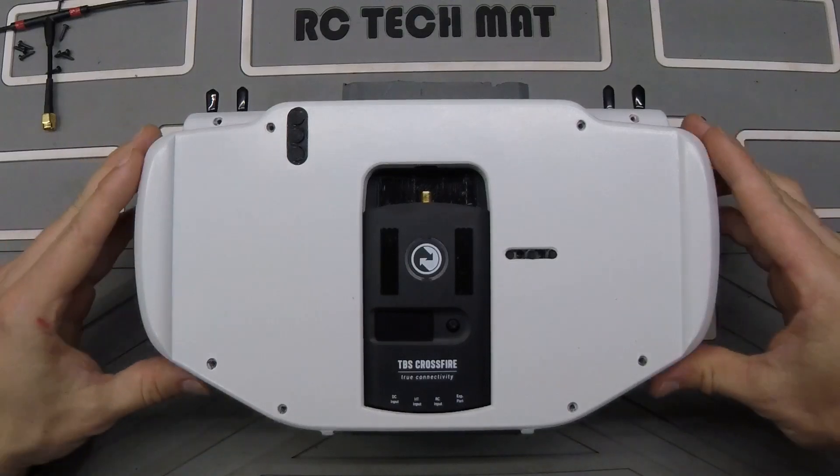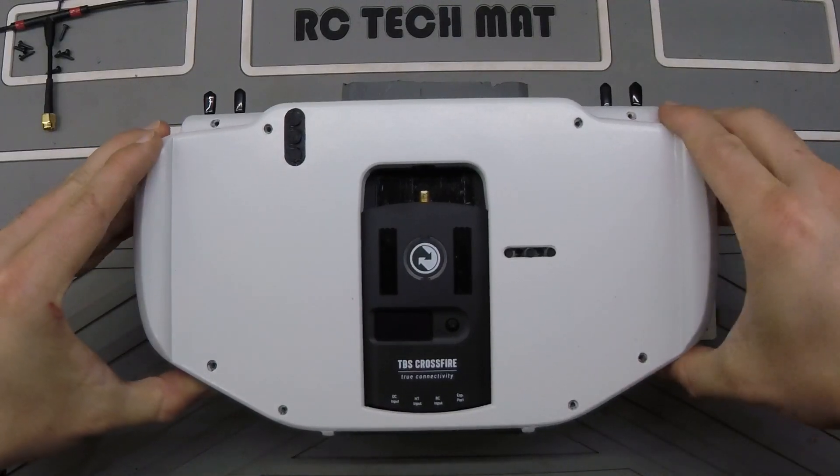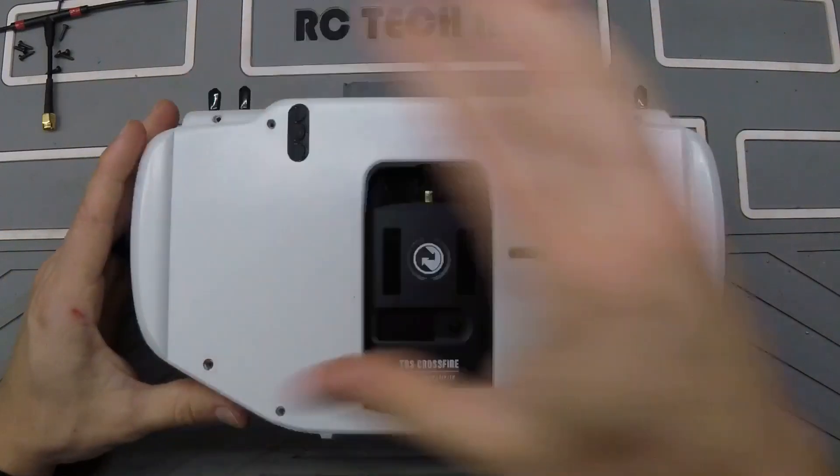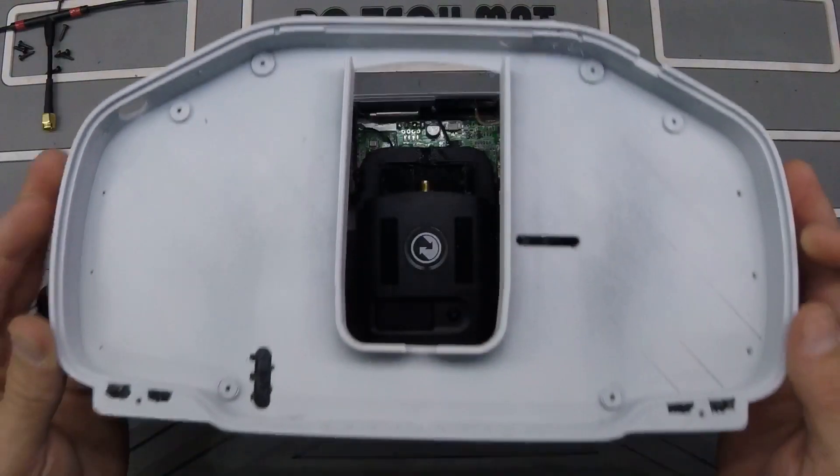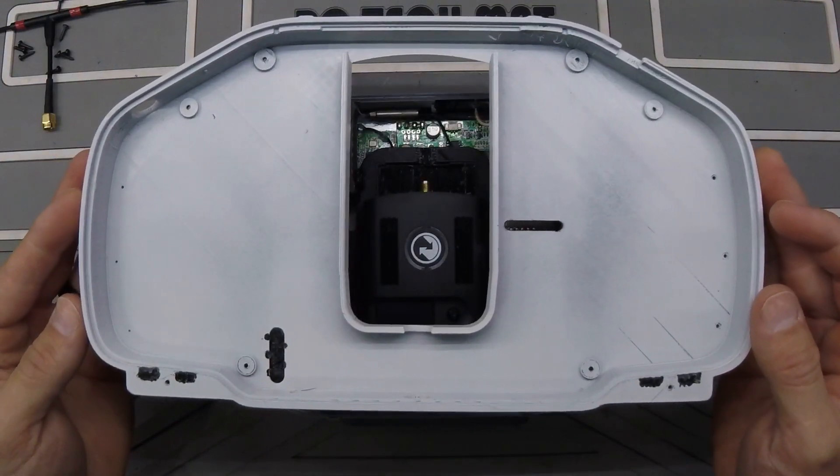So once we remove the eight screws and the antenna, the back cover just pops off. There's nothing else holding it in place, and as we flip it over we see there's really nothing on the inside either.